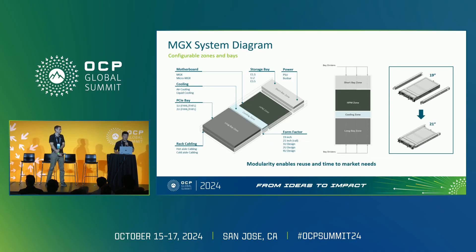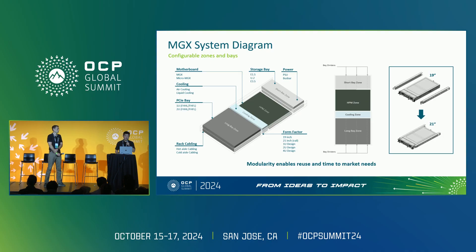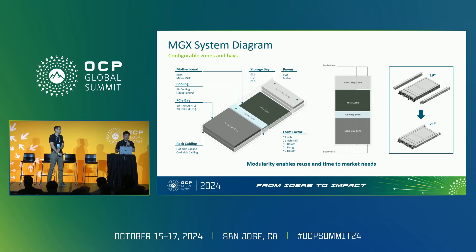Let's take a deeper dive into the highlights of the MGX architecture. There are four different sections in the system. The top light gray zone is a short bay zone largely used for storage devices like E1.S, U.2, E3.S, but also has the ability to place power as PSU and bus bar. Right below that is the HPM zone — basically the motherboard for the system which could include the CPU as well as GPU.